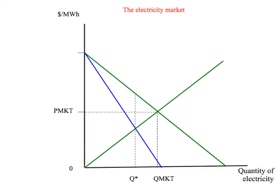Now let's consider it from the other perspective — suppose we consider the marginal pollution cost as being a negative value, something that reduces the value to society of consuming electricity. Notice that this doesn't change our supply curve; it's exactly where it was before. The supply curve still tells us, for any price, how much electricity generators wish to produce and sell. The upward sloping supply curve is now both the marginal private cost curve and the marginal social cost curve, because we're putting the externality on the consumption side — so there is no divergence between marginal private cost and marginal social cost.